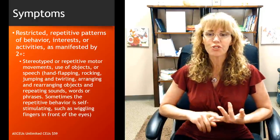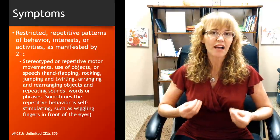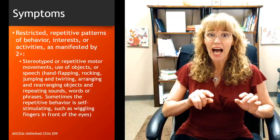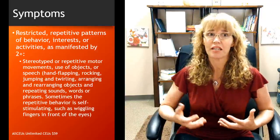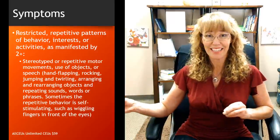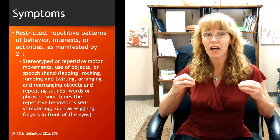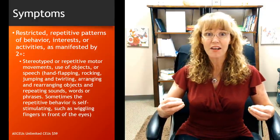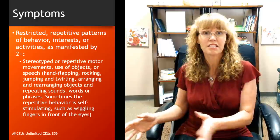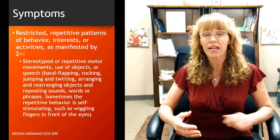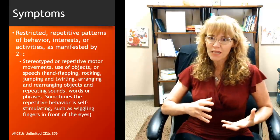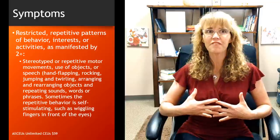One characteristic is stereotyped or repetitive motor movements, use of objects, or speech. This includes what many refer to as stimming — hand flapping, rocking, jumping, and twirling. Stimming, or self-stimulation, serves various purposes. Remember: behavior is communication. Sometimes stimming is self-soothing — even people without autism who are stressed or dysregulating may hug themselves and rock. So the repetitive movements may be a response to feeling out of control.